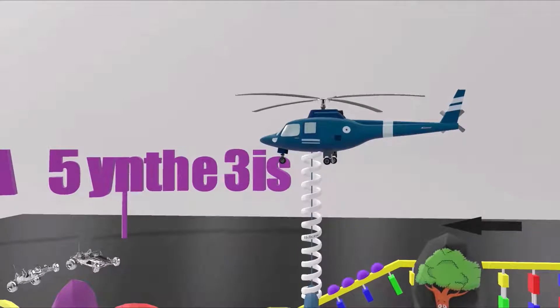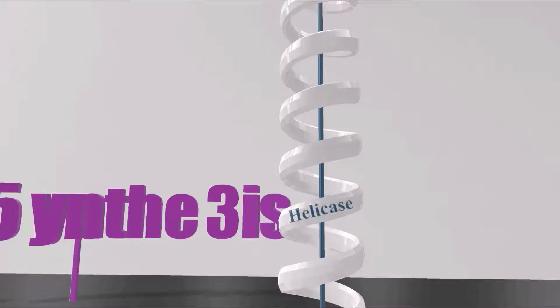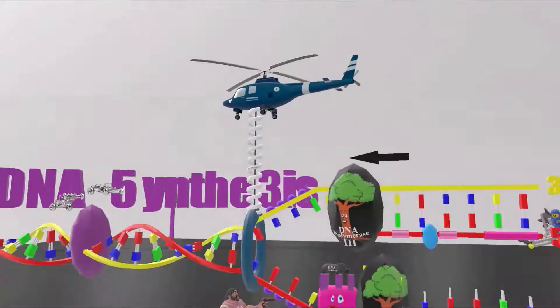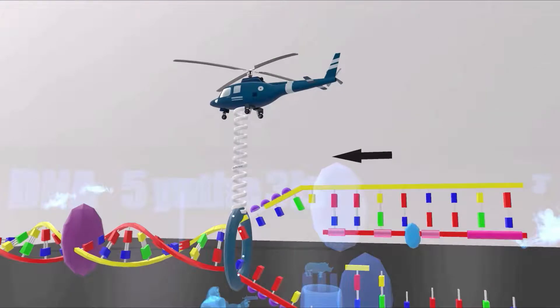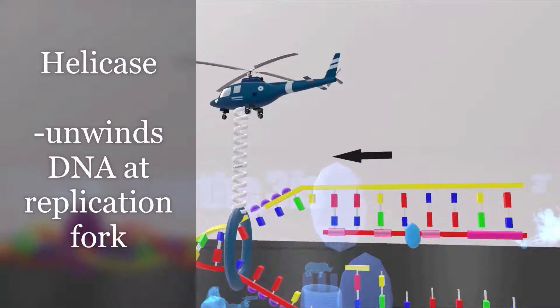Then we get to the helicopter for helicase. The helicopter has this helical staircase coming down from it, which also reminds us of helicase. As you can see, helicase, held up by the helicopter, is separating the DNA strands. It's unwinding the DNA at the replication fork. This is what helicase is responsible for.